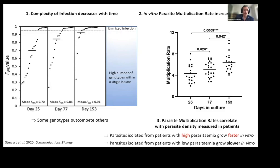Very importantly, we previously showed that, at least within this dataset from Ghana, the in vitro parasite multiplication rate directly correlates with the parasitemia in the patient. In other words, if you have a patient with high parasitemia, you take the parasite and put it into culture, it grows fast. If you have a patient with low parasitemia, that parasite in culture will grow slower. So it indicates that some parasites are inherently faster growers than others.